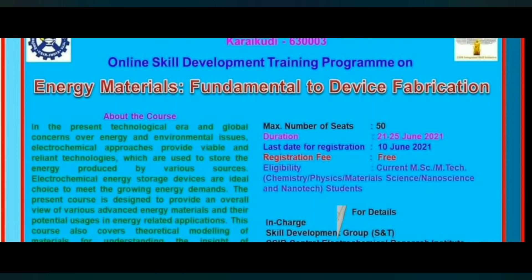I will discuss one by one how to register and form filling. The eligibility here is for current MSc and MTech students — Chemistry, Physics, Materials Science, Nanoscience and Nanotechnology students can apply. The maximum number of seats is 50, meaning that 50 students will be selected for the online skill development training program.